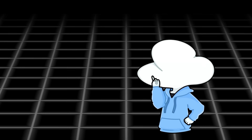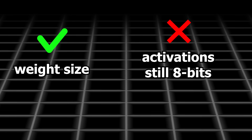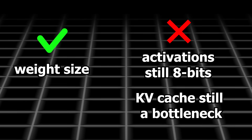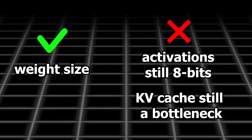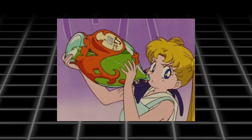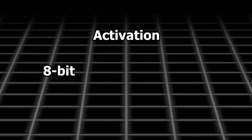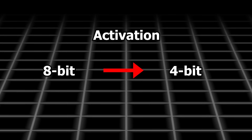While this research paper proves that BitNet works — especially at larger parameter counts — it still only addresses weight size. The activations are still passed around in 8 bits, and the KV cache is still a bottleneck that stacks up easily the longer the context window is. So to juice out some extra efficiency, the same researchers dove into reducing activations from 8-bit to 4-bit, 8 months later.